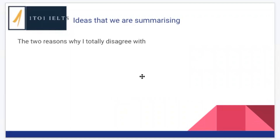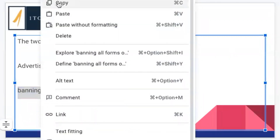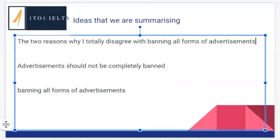You'll notice in a lot of my lessons I talk about noun phrases and clauses. If you're not sure what these are, type them into Google — these are really important parts of sentence structure. Noun phrases often start with what type of word? A gerund — exactly. We often start noun phrases with a gerund. So: 'The two reasons why I totally disagree with banning all forms of advertisements.' We can see this is a noun phrase. This is the first part of the structure.